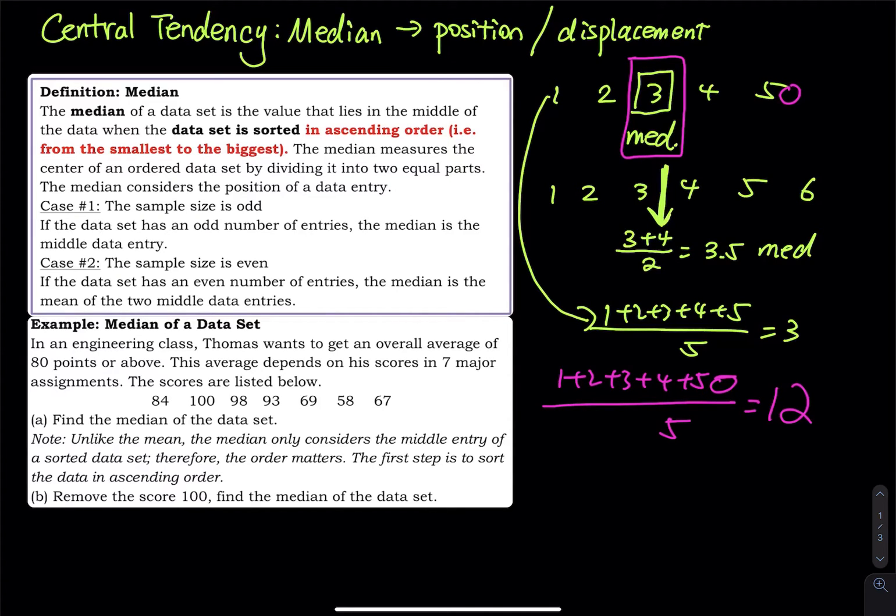The median considers the position of a data entry. So if the sample size is odd, the median is the middle data entry, just like the first data set. If the sample size is even, the median is the mean of the two middle entries.